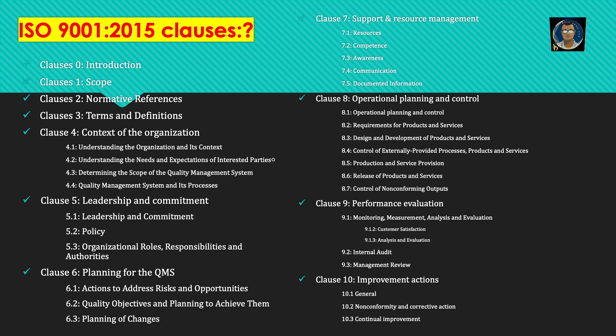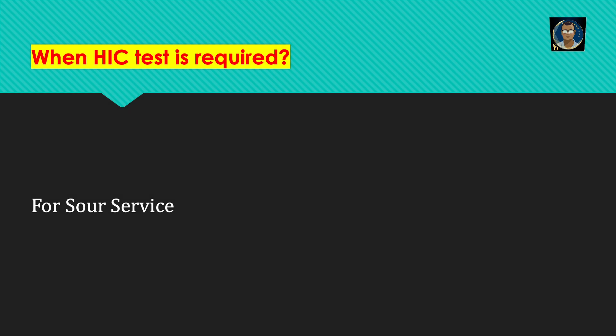Clause 9 is performance evaluation, with three sub-clauses: 9.1 monitoring, measurement, analysis and evaluation — which can be further divided into customer satisfaction and analysis and evaluation; 9.2 internal audit; 9.3 management review. Clause 10 is improvement actions, with three sub-clauses: 10.1 general, 10.2 non-conformity and corrective action, 10.3 continual improvement.